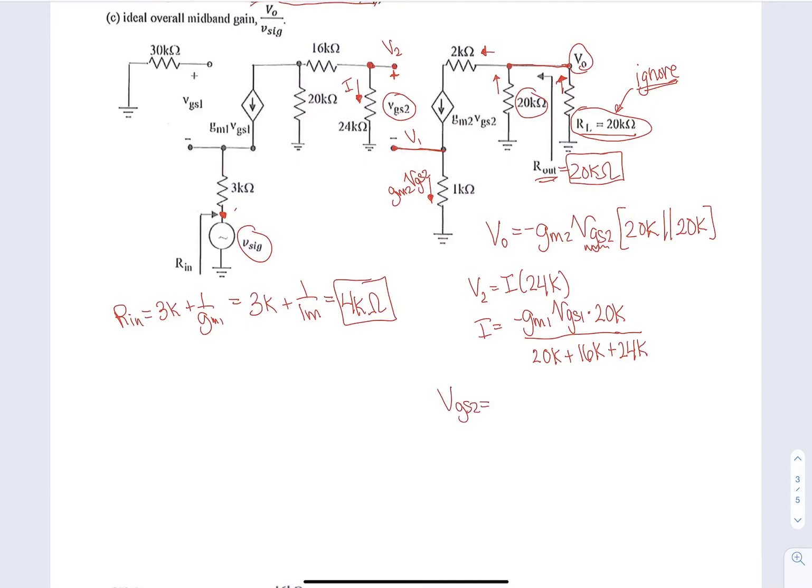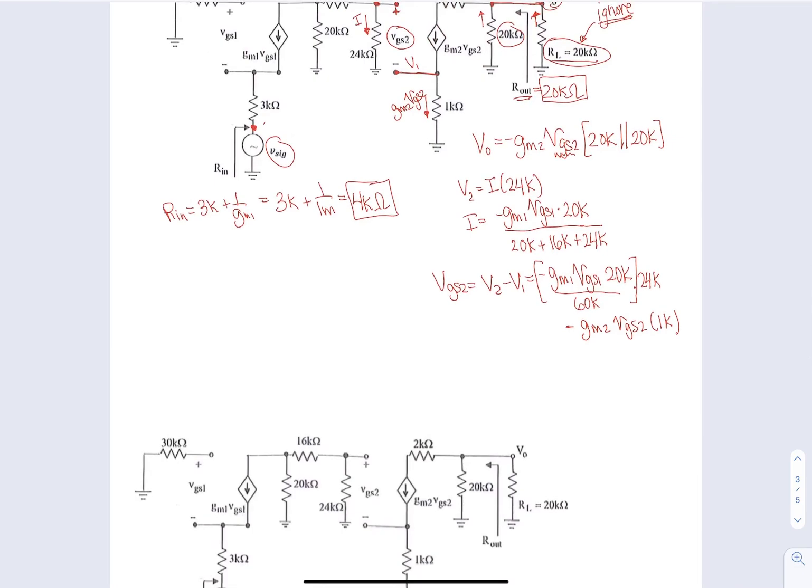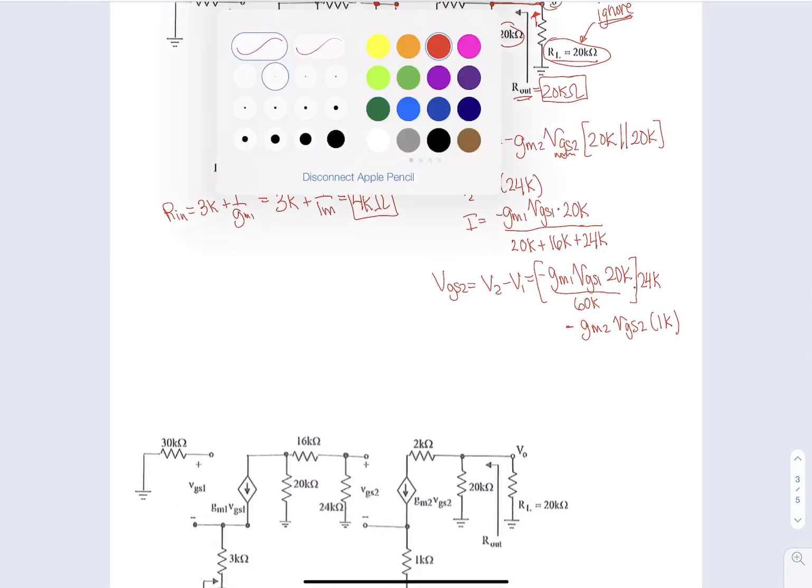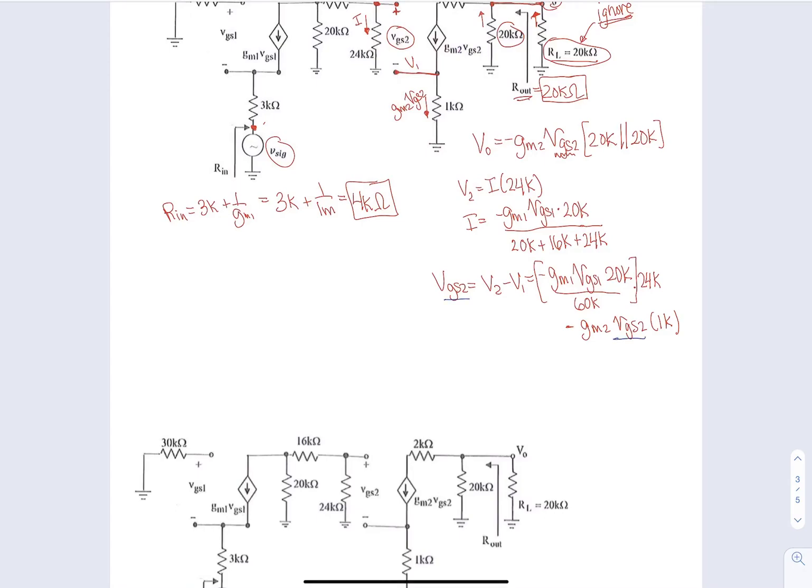V2 is going to be V2 minus V1. So I plug all this in, so minus GM1 VGS1 times 20K over, that's going to be 60K, and then multiply that current by 24K. So this is the current portion, and then times 24K, and then minus GM2 VGS2 times 1K is my V1.